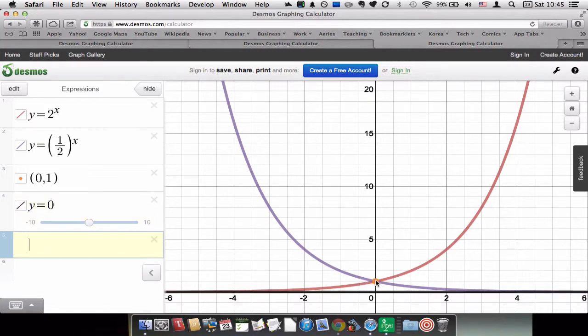You'll see that they both pass through the point (0,1). They both have a horizontal asymptote at y = 0, and in fact they're mirror images of each other.